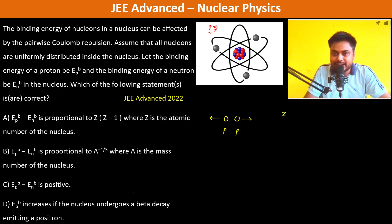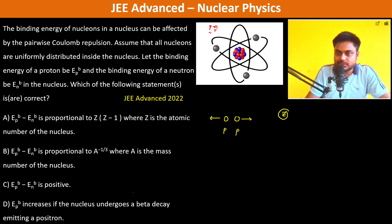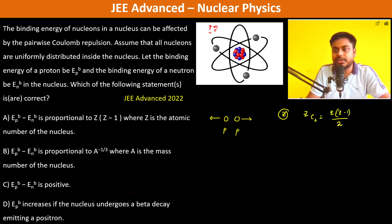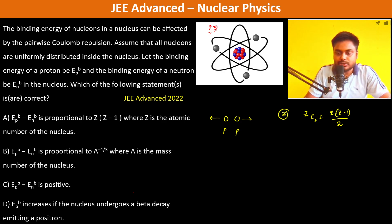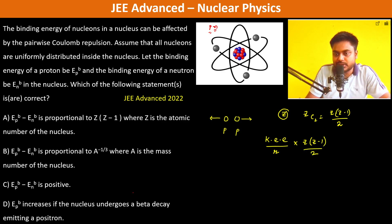Since there are Z number of protons, the potential energy stored in them is Z(Z-1)/2 — that many pairs will have potential energy. This potential energy is k·e²/r, and since there are Z(Z-1)/2 pairs, this is the total potential energy stored in the protons.